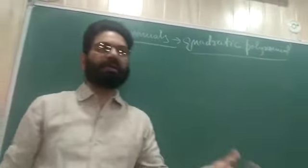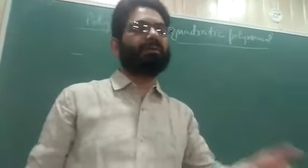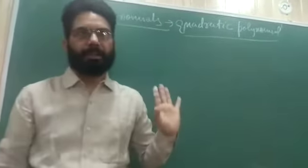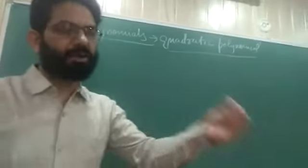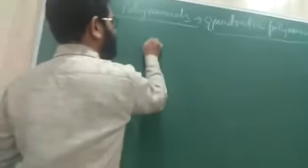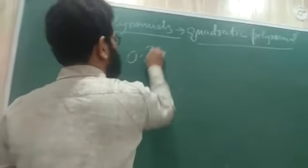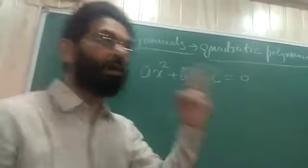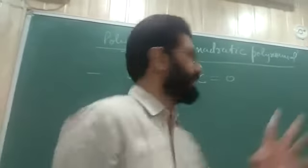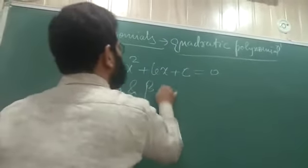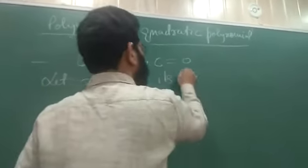To recognize the degree of a polynomial, we look at the highest power of x involved in it. Since we are discussing quadratic polynomials of the form ax² + bx + c = 0, it will contain two zeros. Let alpha (α) and beta (β) be its two zeros.